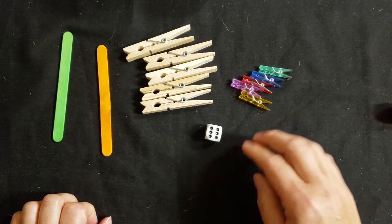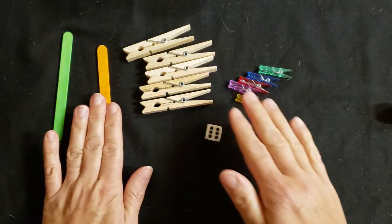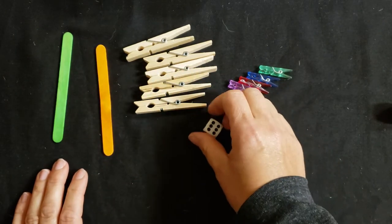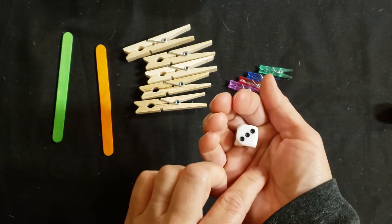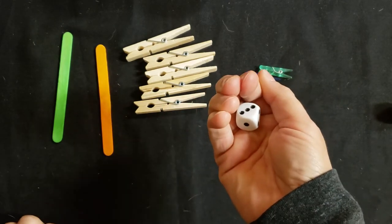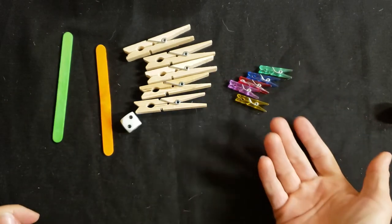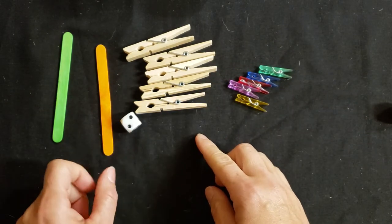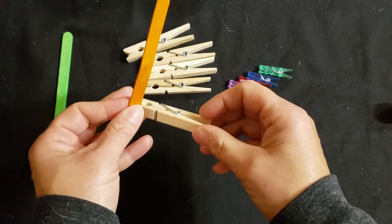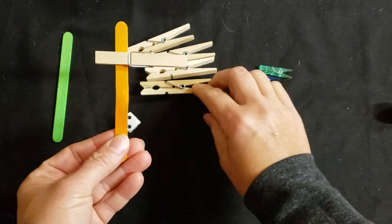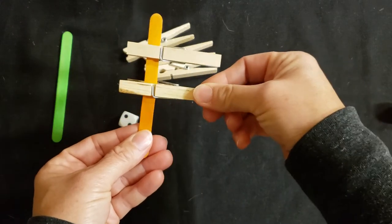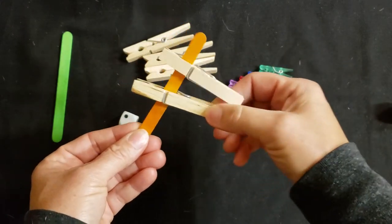Put the dice into the palm of your hand, cup it, shake and roll. I got a two—one, two. So I'm going to pick regular clothespins to put on—one, two—and then I take them off and roll the dice again.